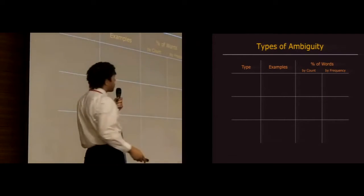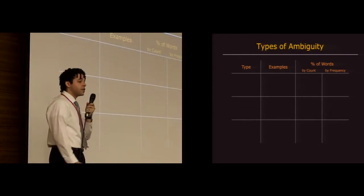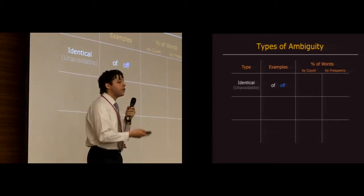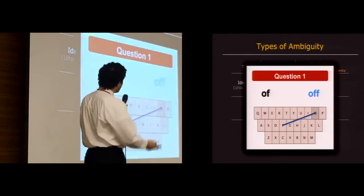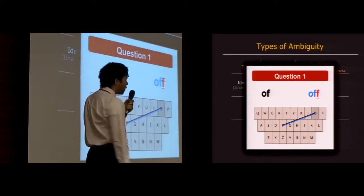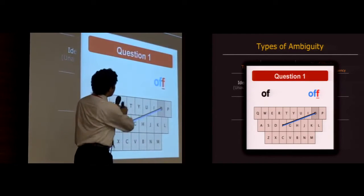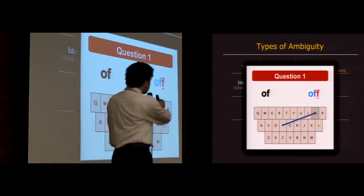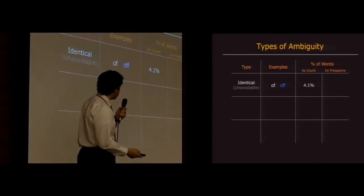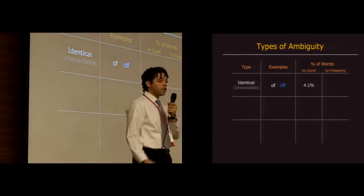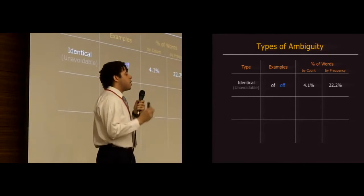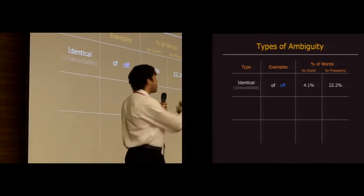So it turns out there are three different types of word gesture ambiguity that we discovered. The first are unavoidably identical gestures such as of and off, which we saw before. So these words were actually the same only because of that duplicate letter F. There's no way to proportional shape match that extra letter F. Maybe you can add some kind of wiggle detection, but not via proportional shape matching. So about 4% of all words in English by dictionary count and about 22% by usage frequency have another word with an identical gesture for this reason.